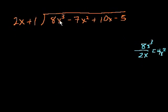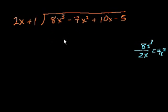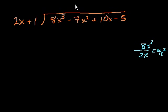So 2x goes into 8x to the third 4x squared times. You don't want to write the 4x squared just anywhere — you want to keep everything in the correct places. When you're dividing polynomials, you can think of the x to the zero space, the x space, the x squared space, the x to the third space. So we write 4x squared in the x squared spot.